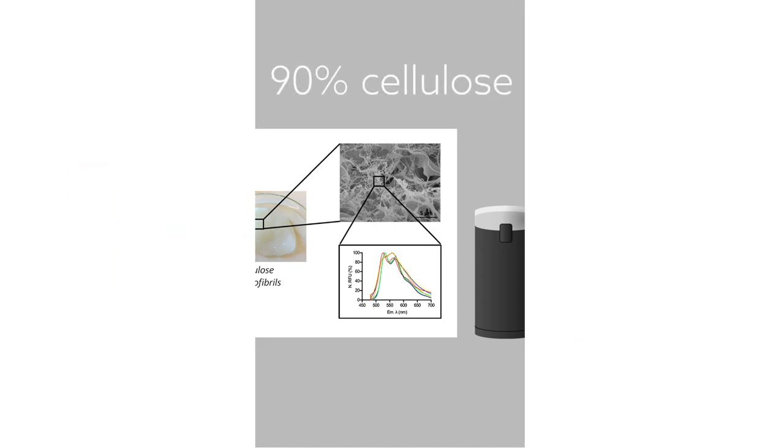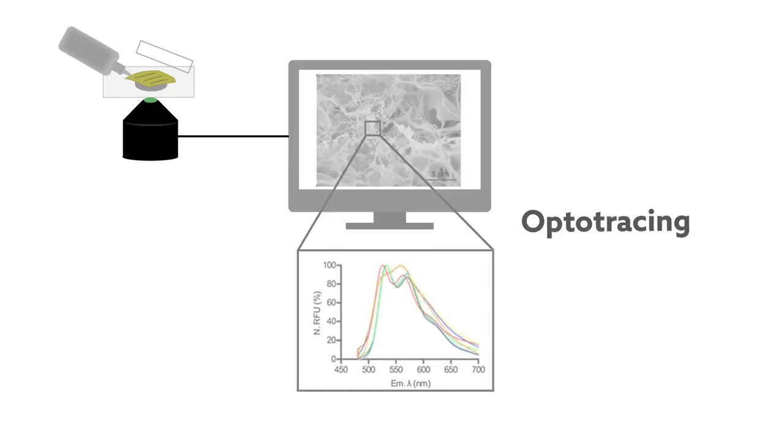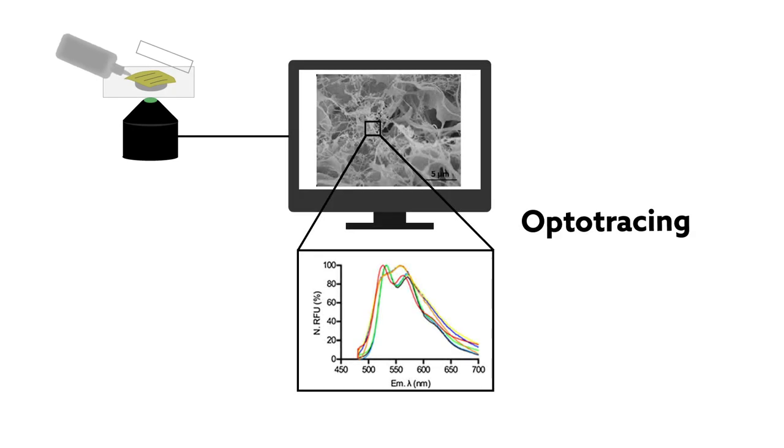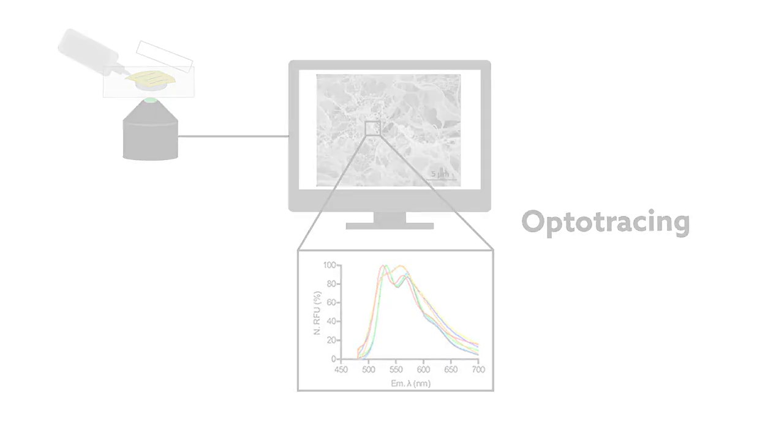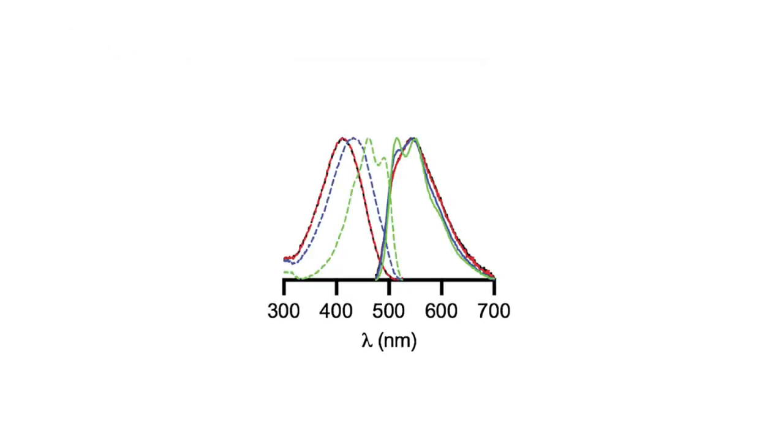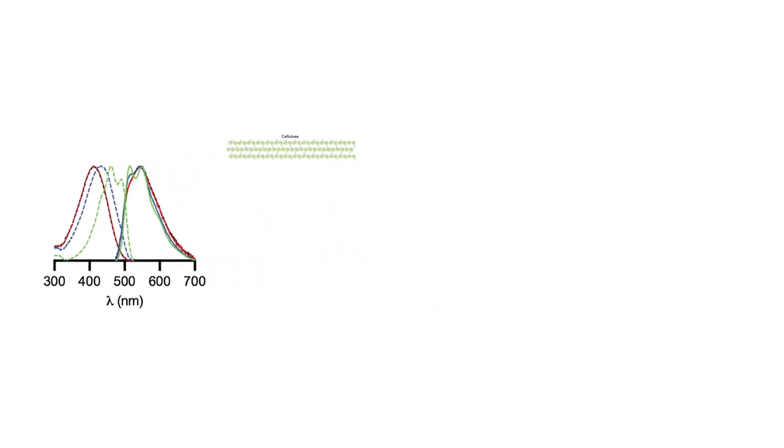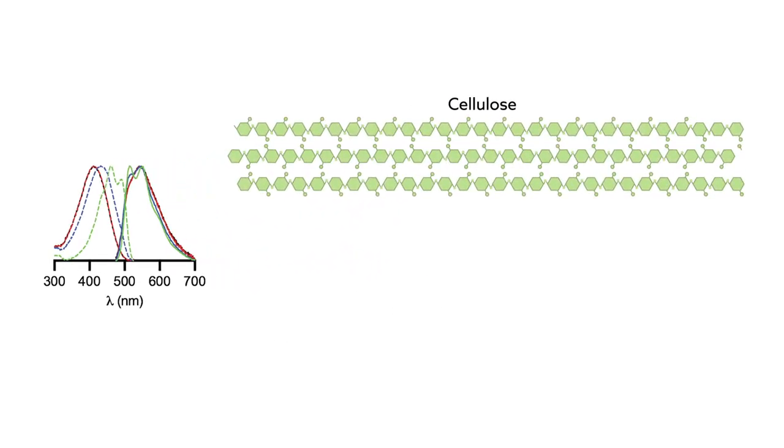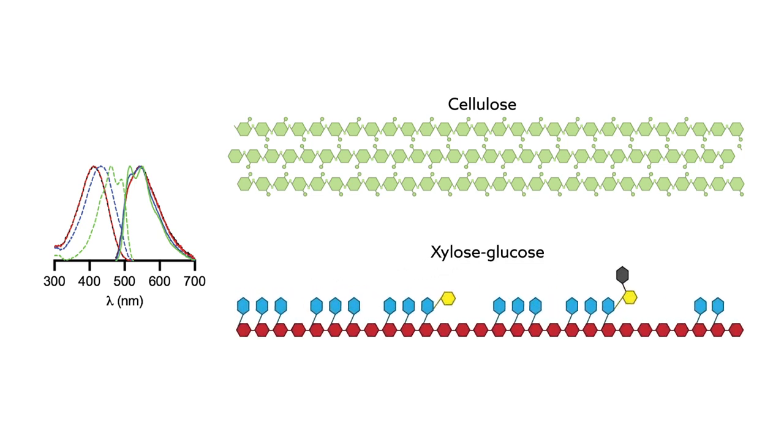The researchers verified their results using an innovative technique known as optotracing. Unlike more destructive methods for determining composition, this method uses optically active molecules, or optotracers, to quantify the polymeric sugar content of raw algae and its extracts. That allowed the team to make a seemingly small but critical distinction, that their aquatically sourced cellulose was indeed cellulose, and not a hybrid of xylose and glucose.